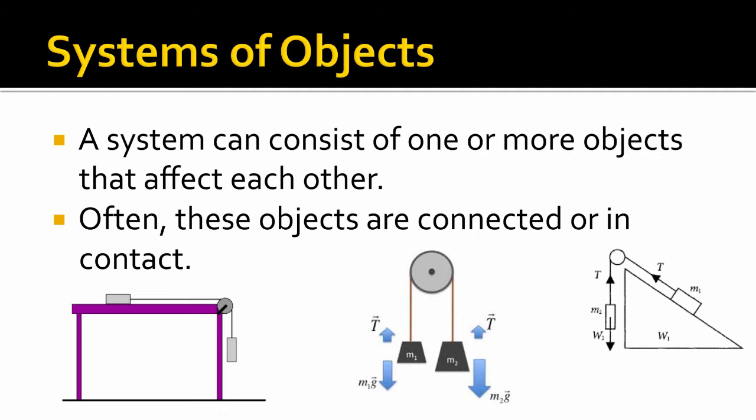Here we have some examples of systems where we have two blocks connected by a string that's going over a pulley. It doesn't have to be going over a pulley. You could have two blocks connected by a string, both of them on a horizontal surface. These are just some standard examples of systems because both blocks affect each other. What happens to one affects what happens to the other.